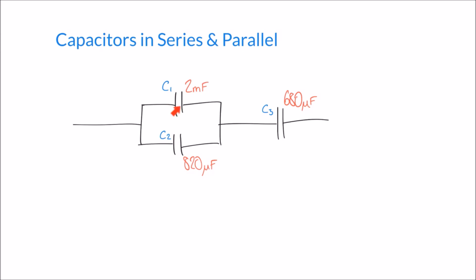We know that capacitors in parallel, we can just add to find the total capacitance. And so what I'm going to call this is C1 in parallel with 2. And I'm going to say that that's equal to 2 millifarads plus 820 microfarads.